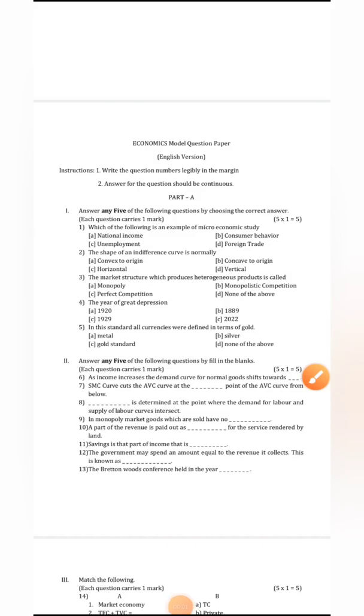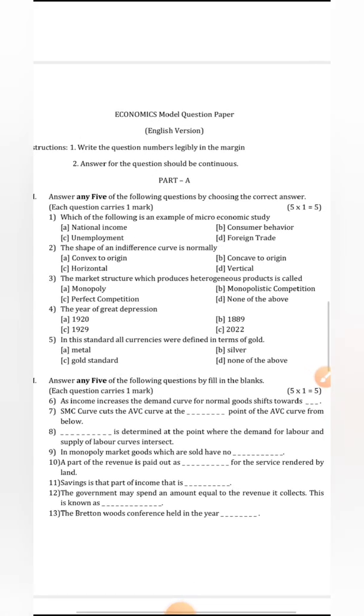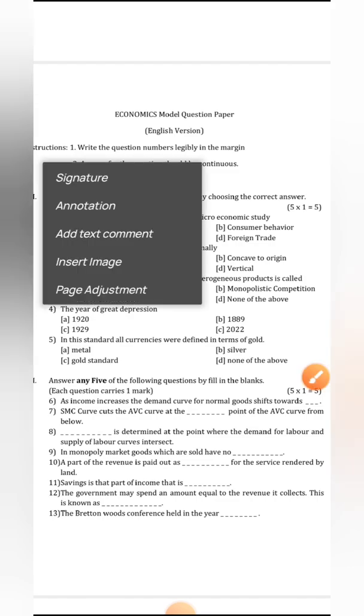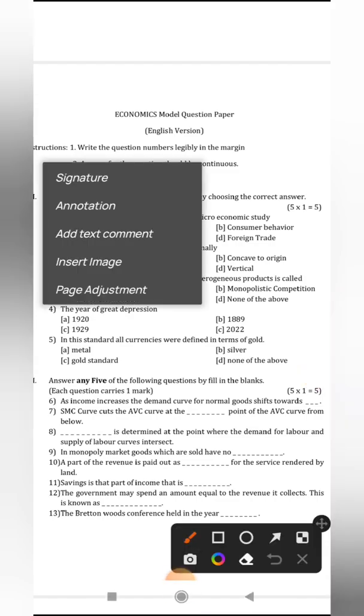We are going to discuss the model paper of economics. We can go through with the first question which is which of the following is an example of microeconomic study. Microeconomic study deals about the detailed discussion of individual things like individual consumer, producer. The answer here we would say is B.